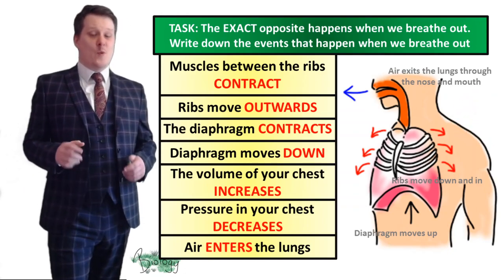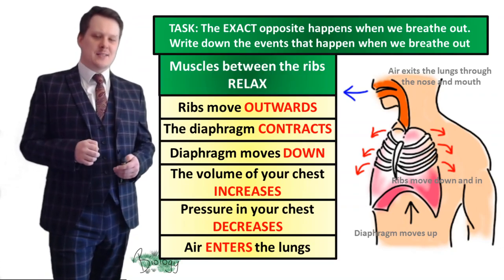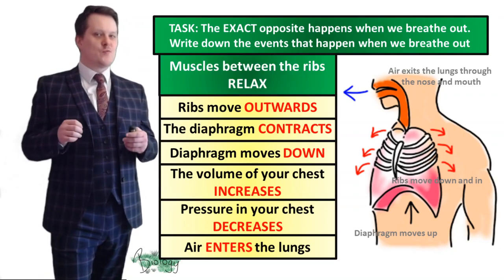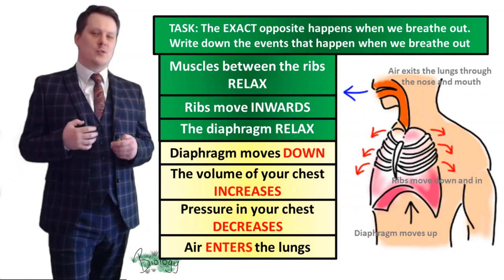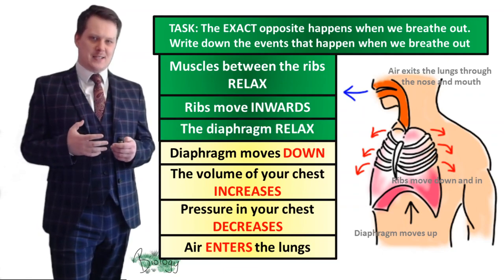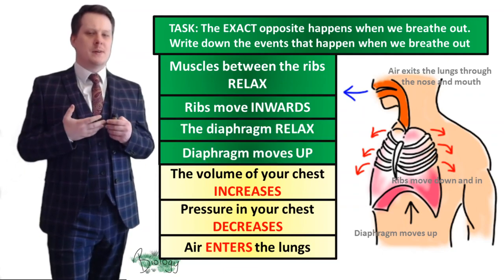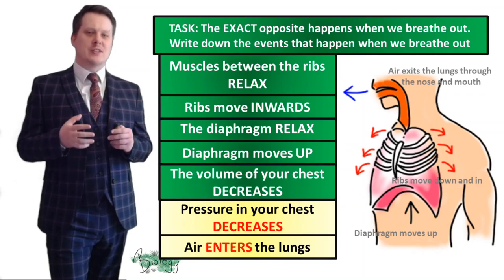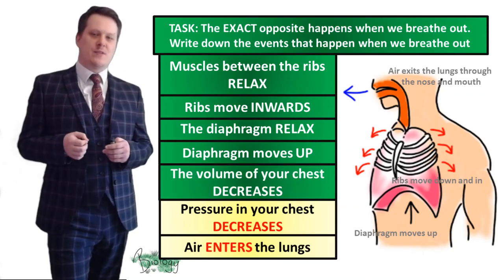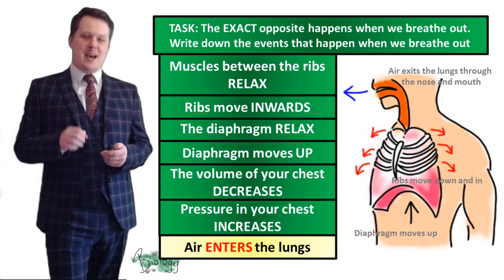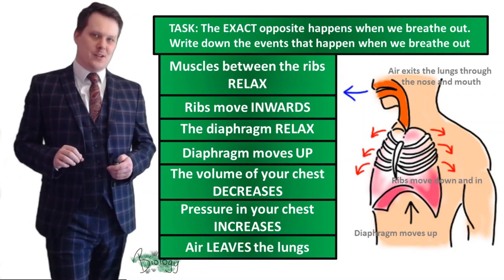When you breathe out, the muscles between the ribs relax, which means the ribs are going to move inwards. The diaphragm is going to relax and move up. The volume of your chest decreases, which means the pressure of your chest increases, and air exits the lungs.